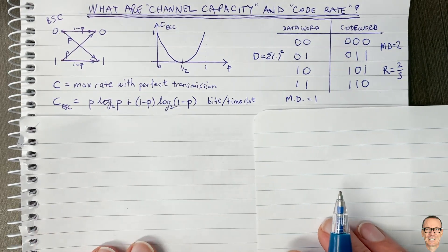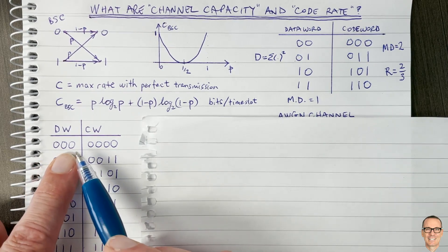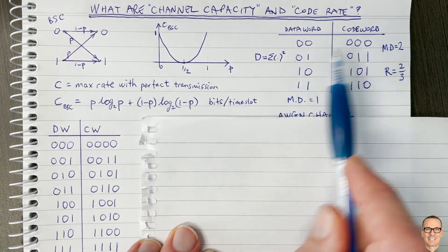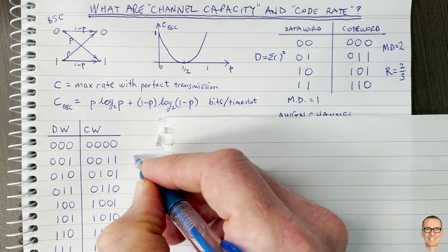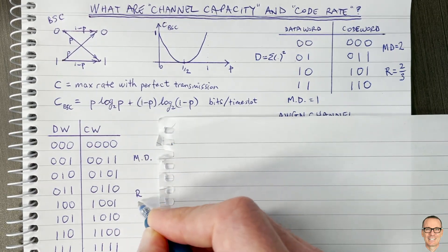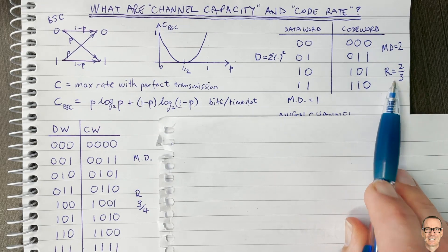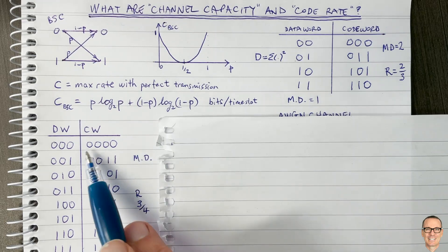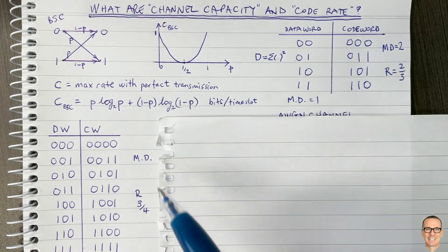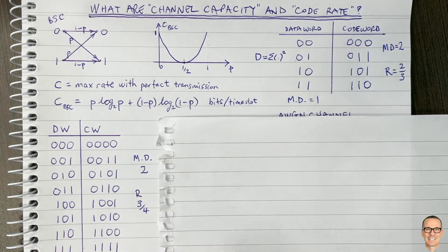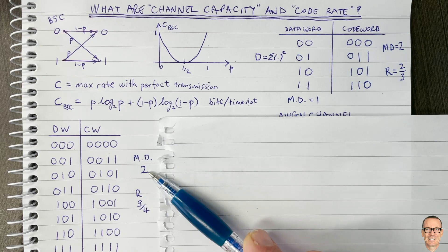Let's consider using longer code words. If we take three bits of data and convert them into four coded bits — instead of two bits into three — the rate improves: it's now three divided by four, or three quarters, compared to two thirds before. We use the channel four times but send three bits. However, using the same parity approach, the minimum distance is still only two, so we have the same ability to detect errors as before — we've improved the rate but haven't strengthened error correction.